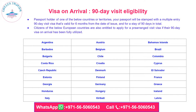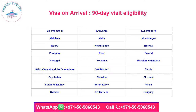For visa on arrival — 90-day visit eligibility — passport holders of eligible countries will have their passport stamped with a multiple-entry 90-day visit visa, valid for six months from the date of issue and for a total stay of 90 days. Citizens of eligible European countries are also entitled to apply for a pre-arranged visit visa if their 90-day visa on arrival has been fully utilized.